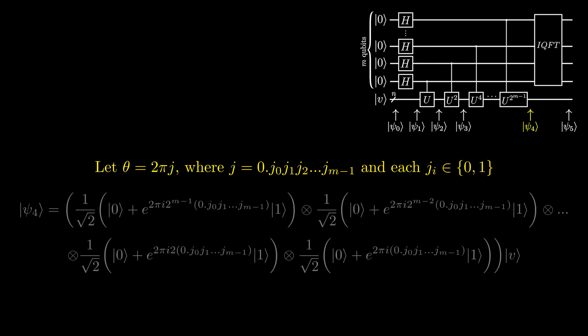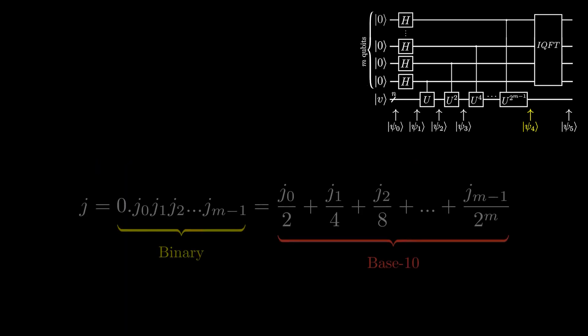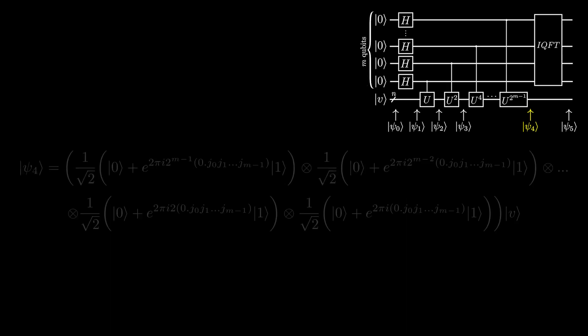Substituting this in, we get this equation. Now, since j is a bit string less than 1, we can represent it like this, which converts it from a decimal in binary to a decimal in base-10. If we now substitute that into our equation, it becomes this.